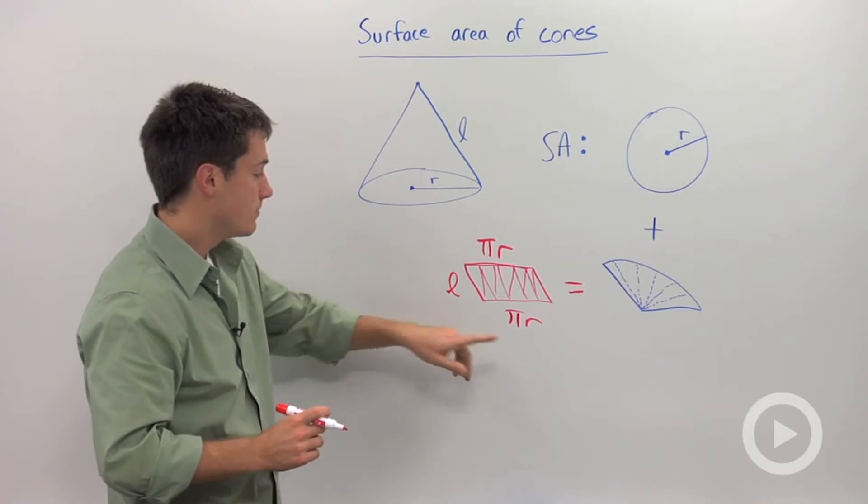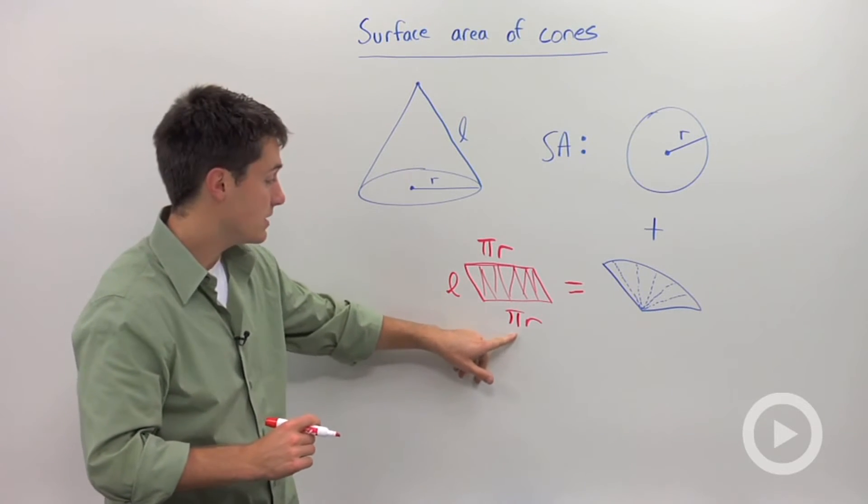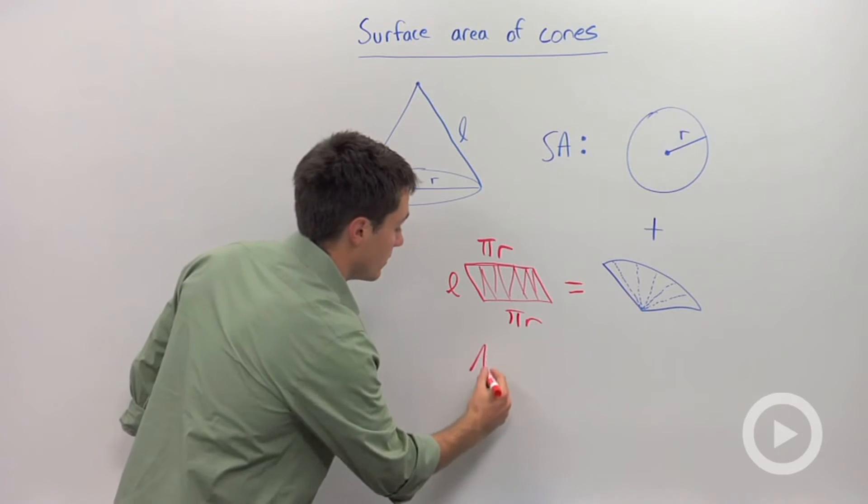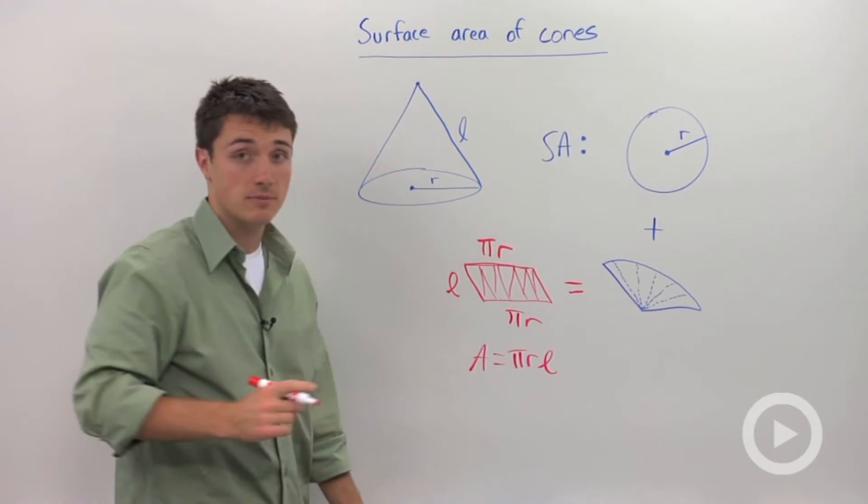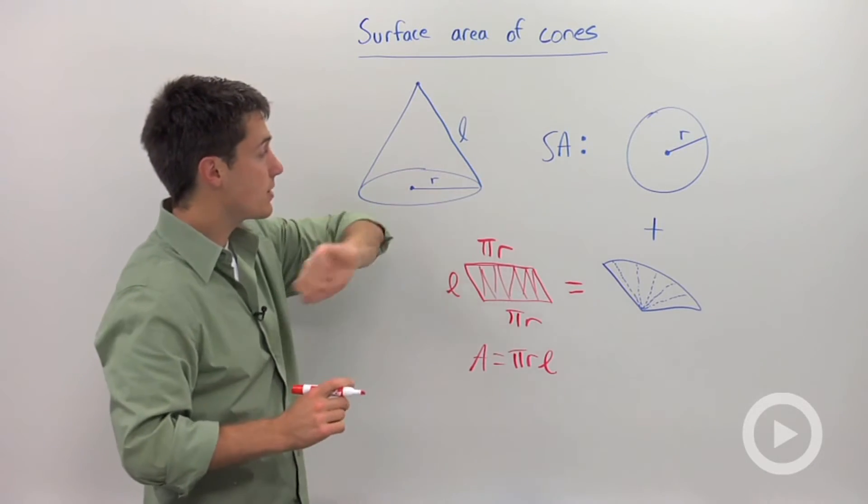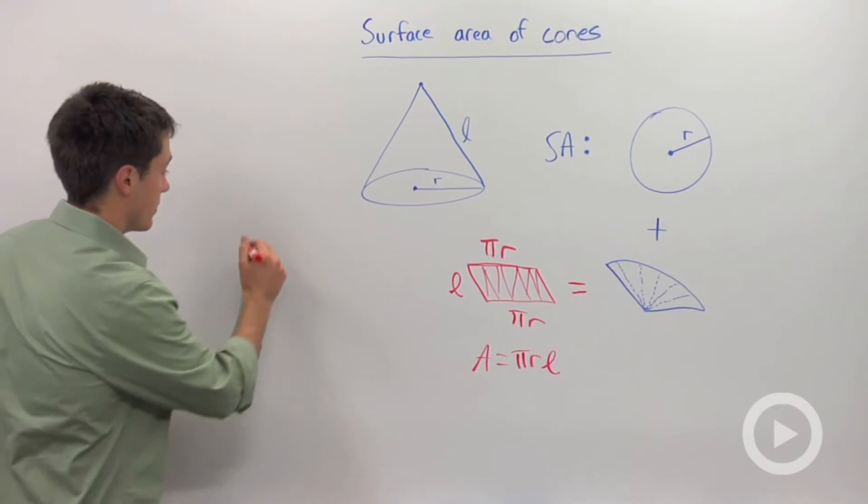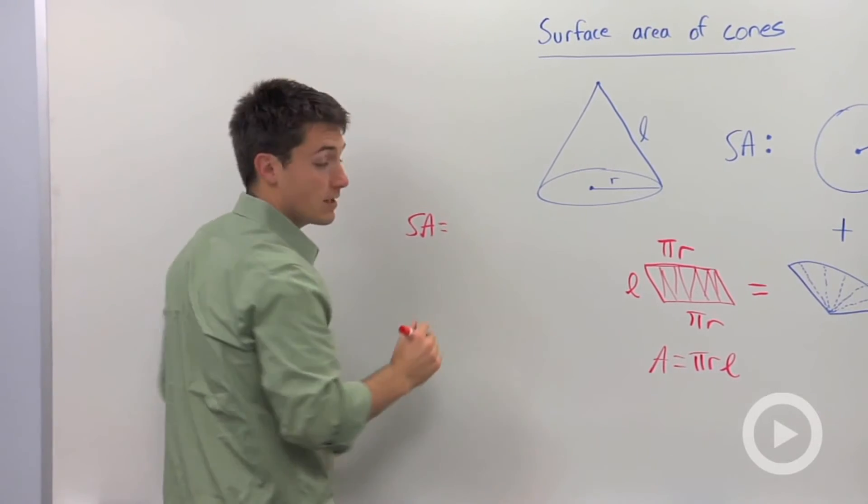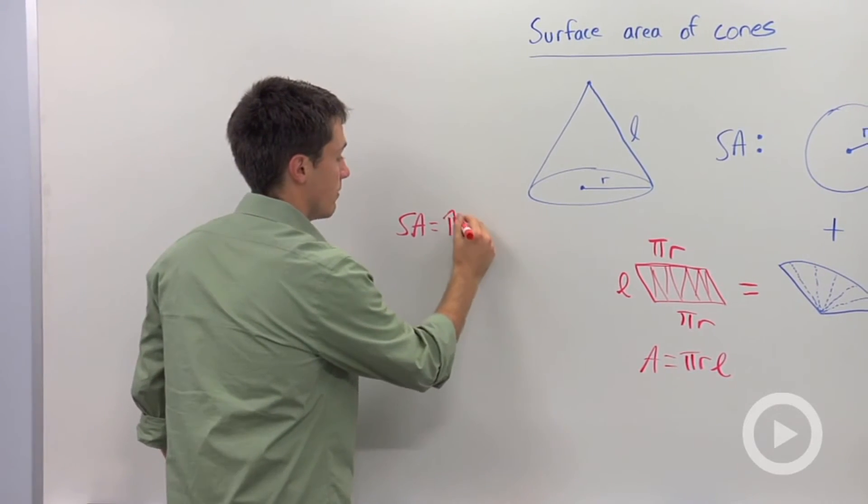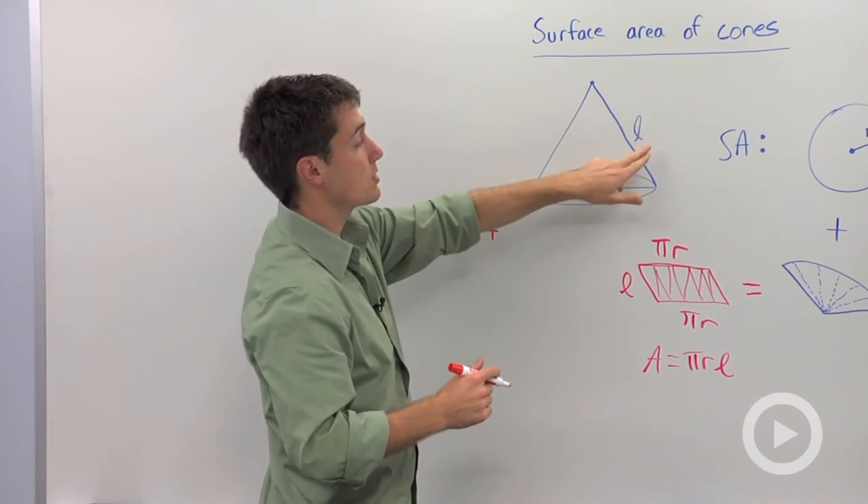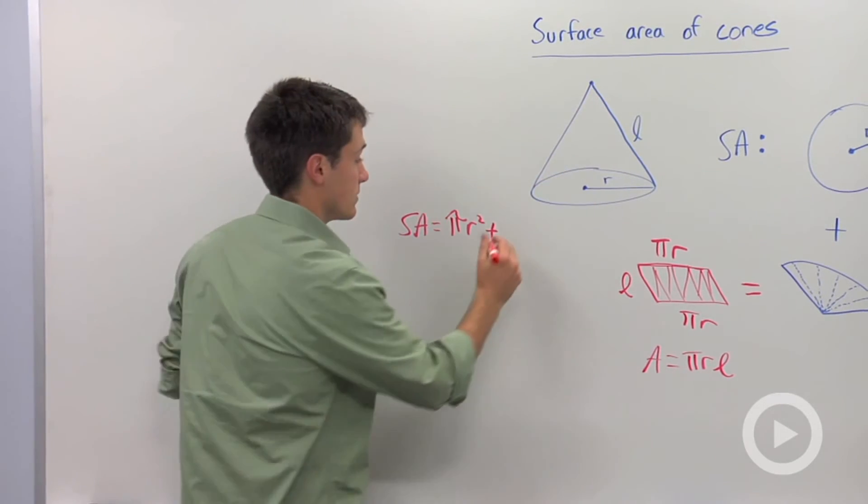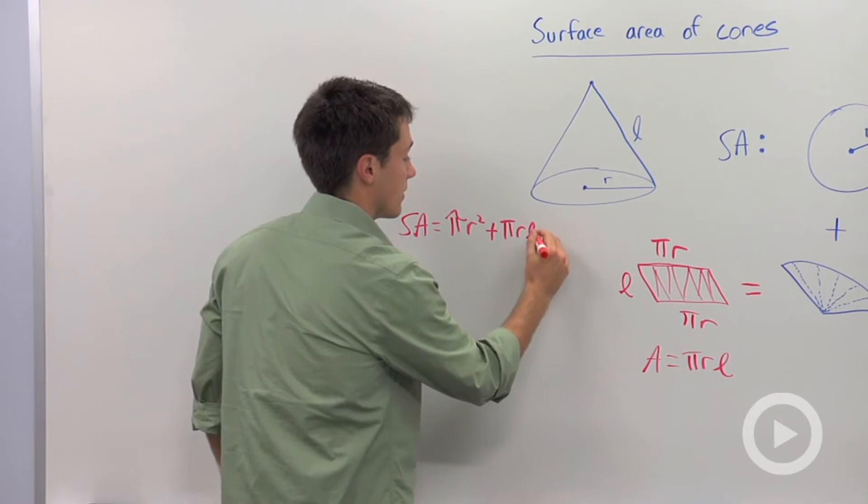So if our height is L and our base is pi times R, then the area of this is equal to pi times R times L. So the surface area of a cone, which I'm going to write over here, is equal to the base, pi R squared, plus this lateral area which is found using your slant height. So that's going to be pi times R times L.